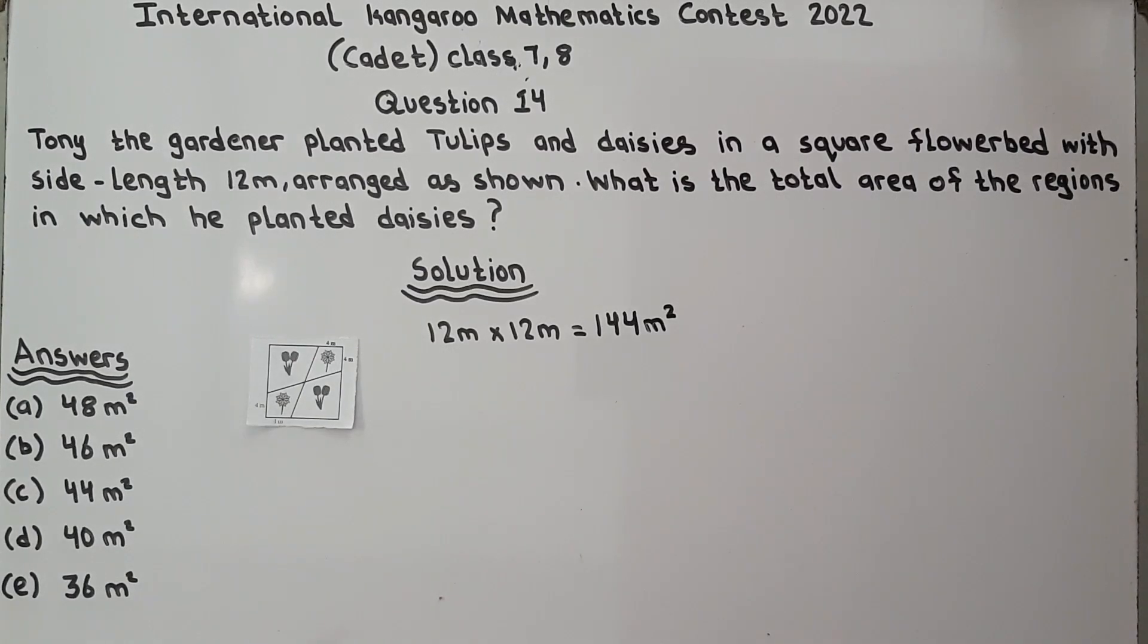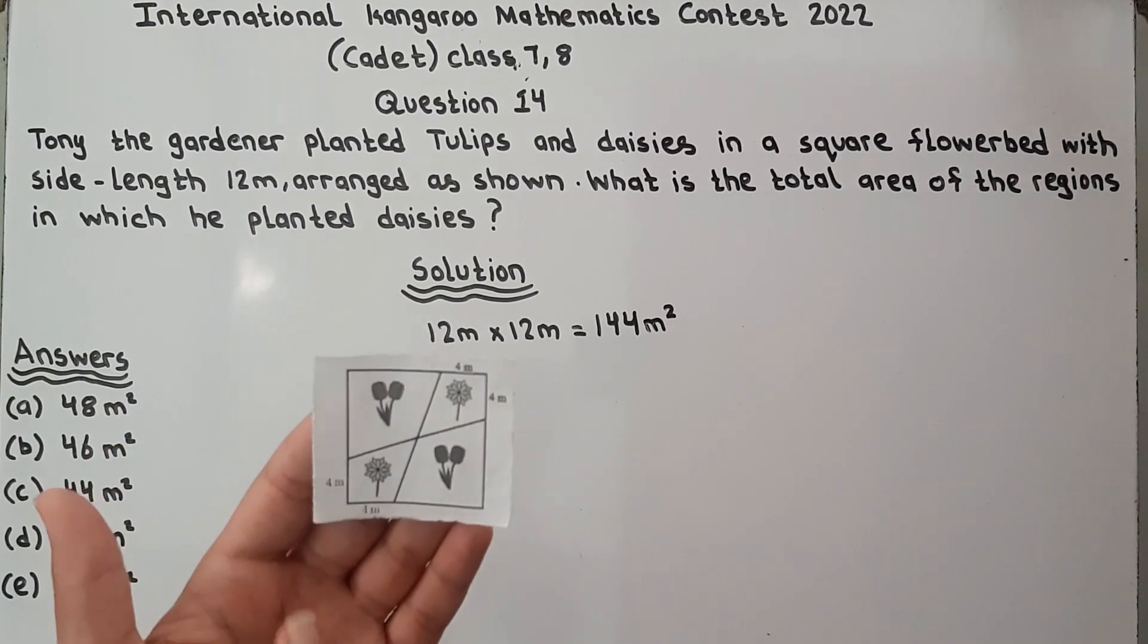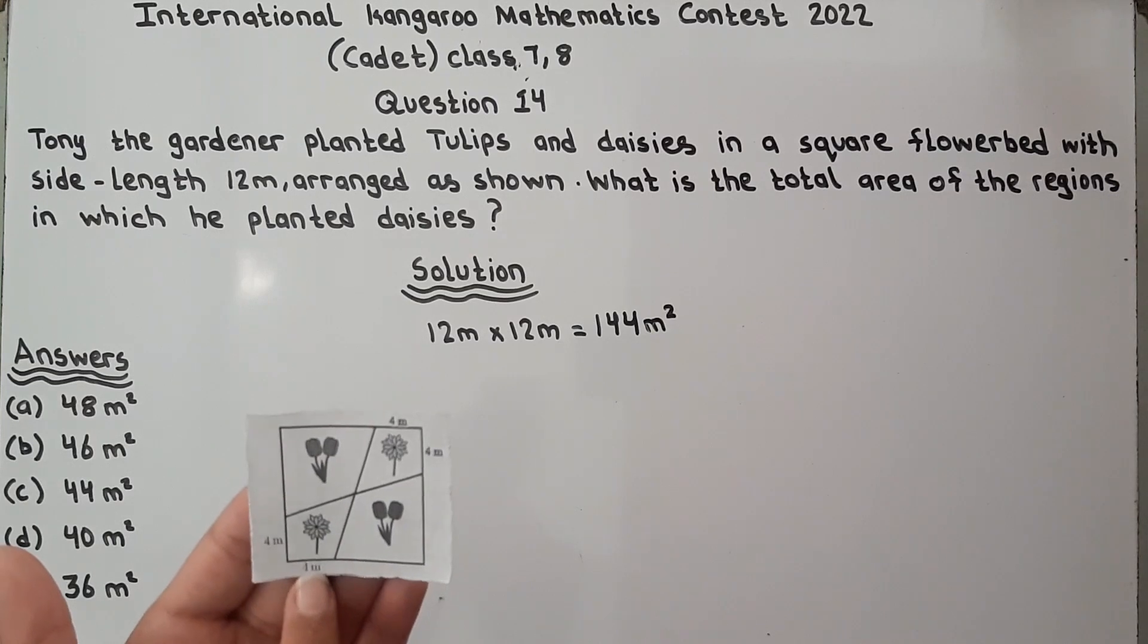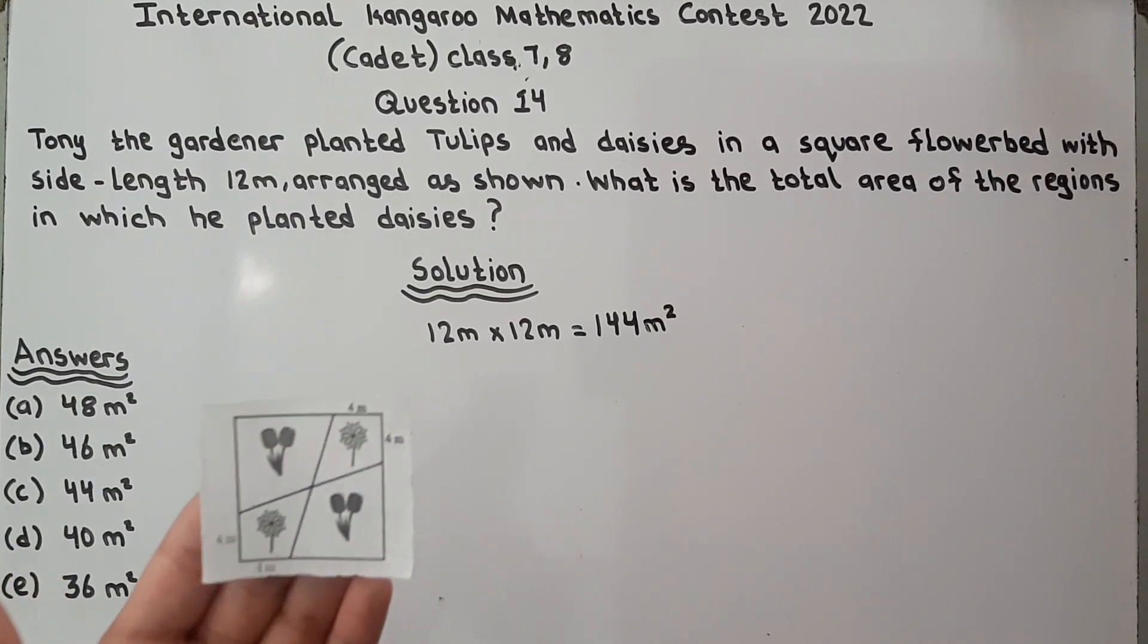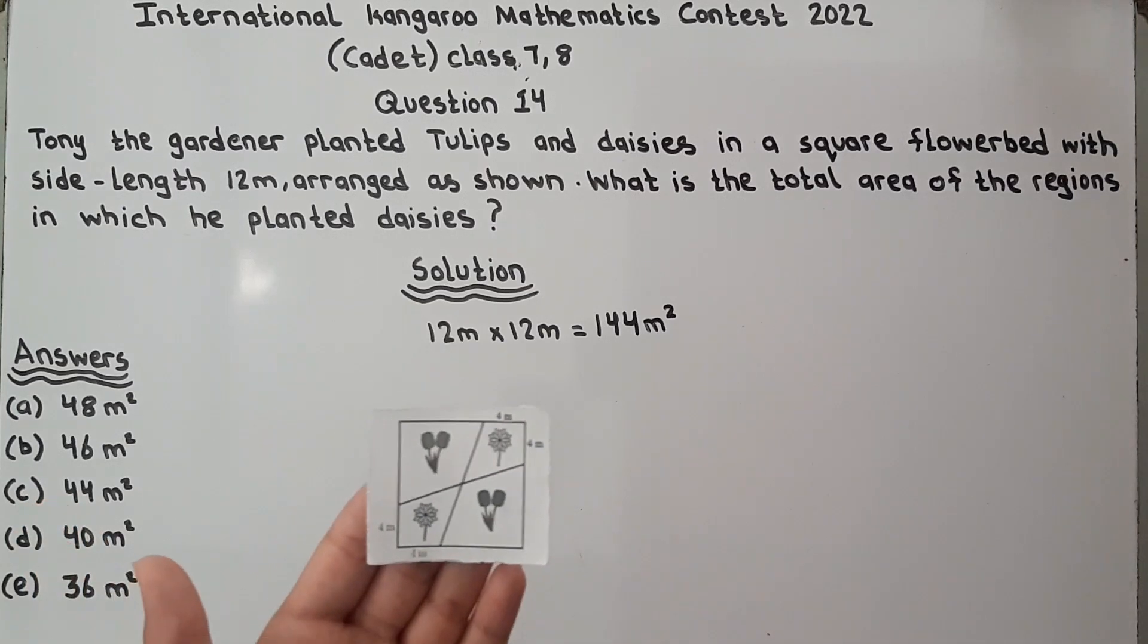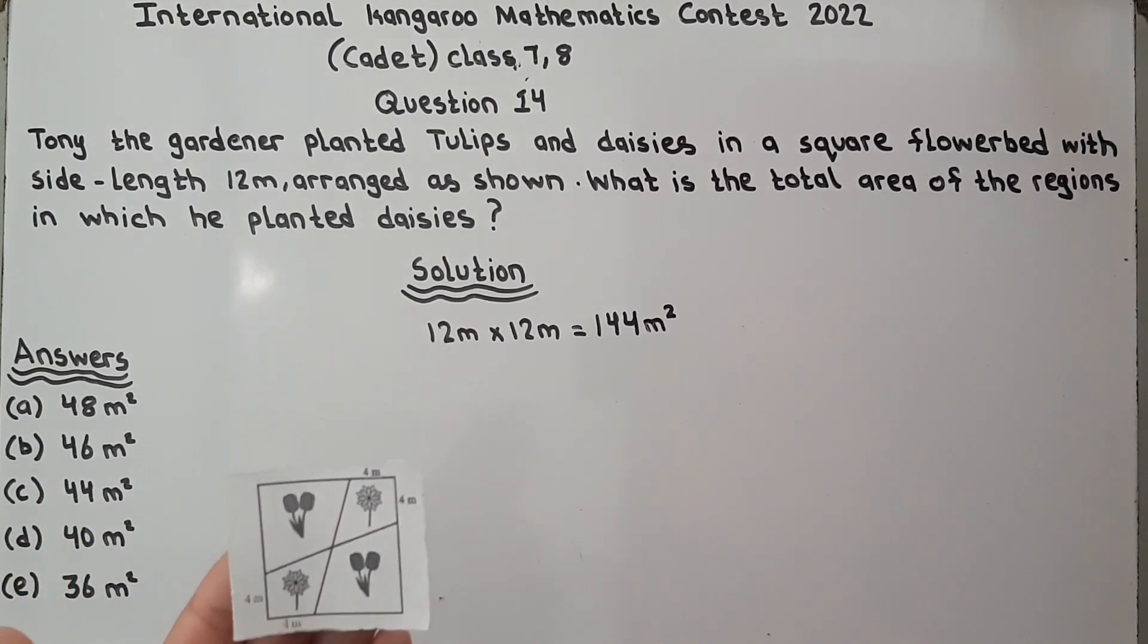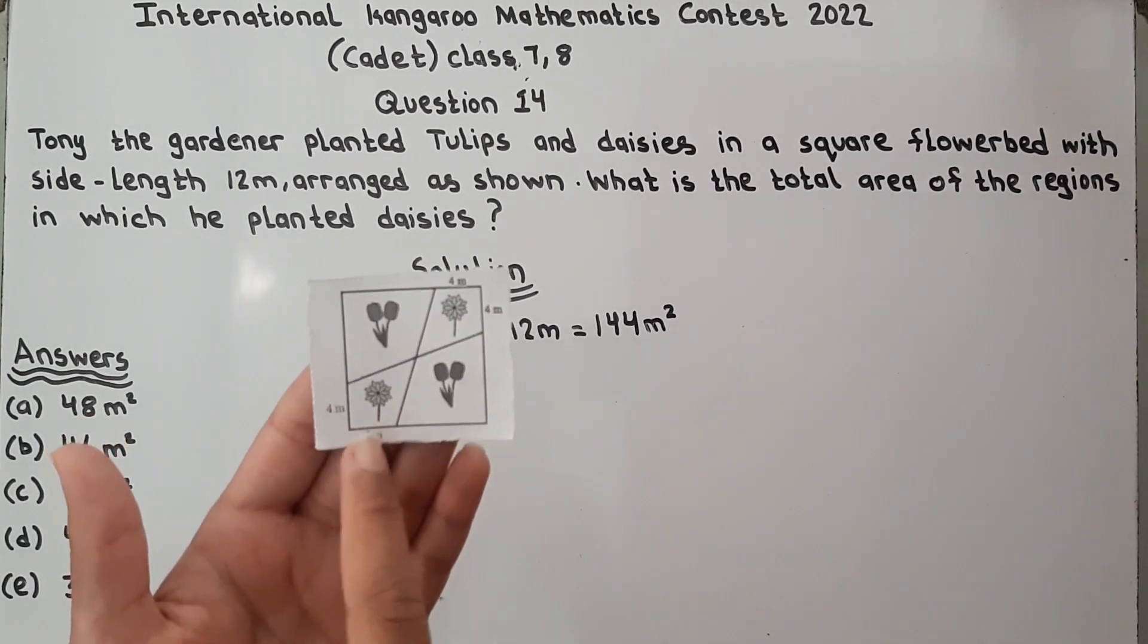Now look. 144 meters square is the area of this square. Now we have to find, the daisies, the region in which daisies are planted is 4 meters of this side and 4 meters of this side. We have to find this.